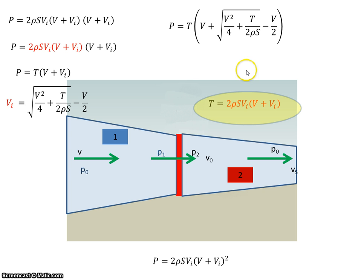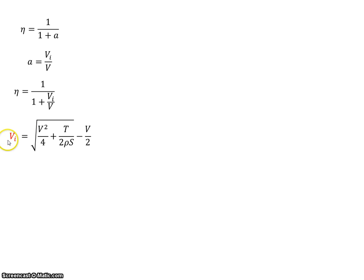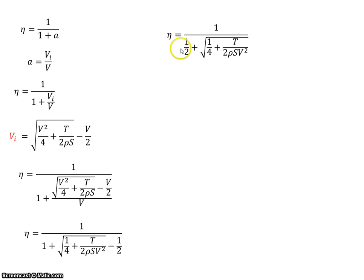That's what we had in the previous slide. And V minus V over 2 just gives me V over 2. So if we remember back, we said that efficiency η equals 1 over (1 + A). We know that A is VI over V, so it's 1 over (1 + VI/V). Substituting in our expression for VI, the efficiency becomes 1 over (1 + all of this), which reduces down. With 1 minus a half giving plus a half, we arrive at the final equation for the efficiency of the propeller.